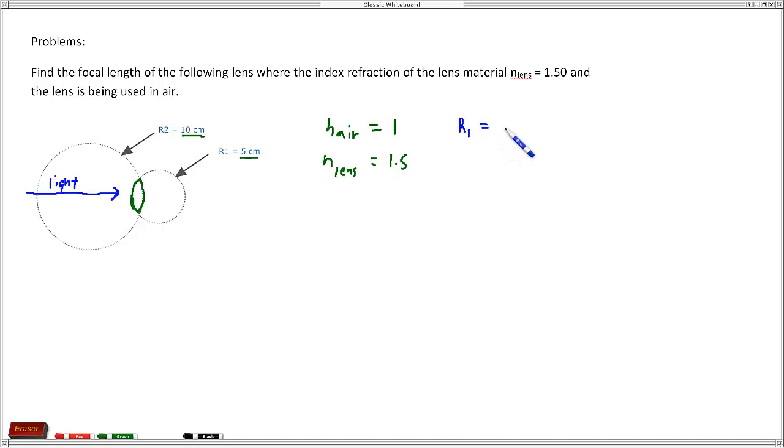So we said that the radius of curvature is 5 centimeters and we'll just keep all these in centimeters because as long as you're consistent with your units it doesn't matter what they really are, because there's no other values in here that we're going to be using that make us keep these units in meters.